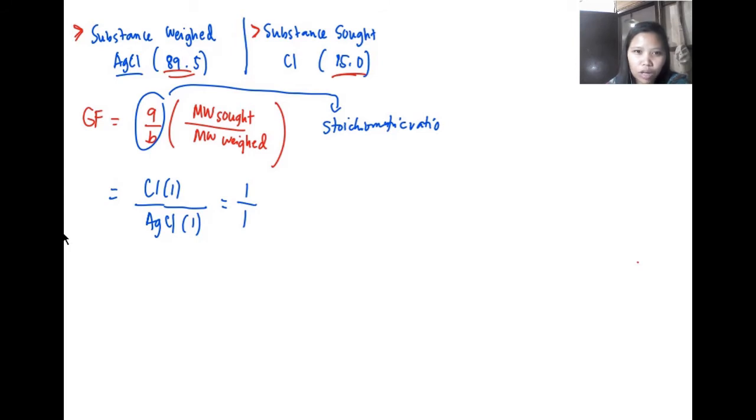Let's proceed to the formula, which is our molecular weight of the substance sought and molecular weight of the substance weight. We have 15.0 for Cl and 89.5 for AgCl. These are molecular weights that are just hypothetical. Now if we multiply it using our calculator we'll get our answer of 0.17. So this is already our gravimetric factor.